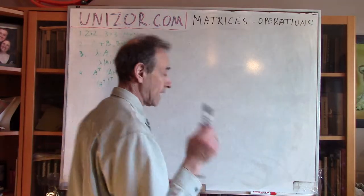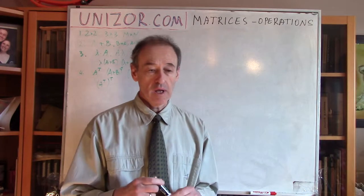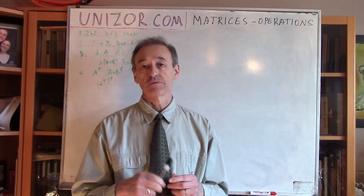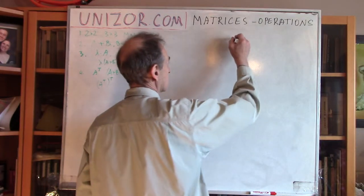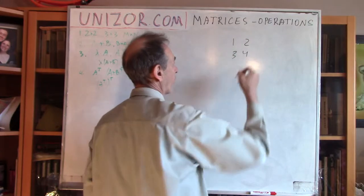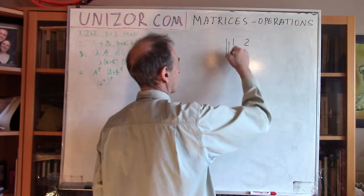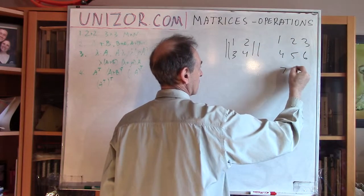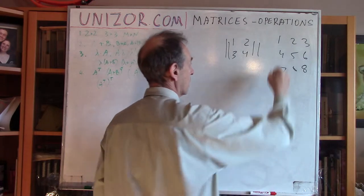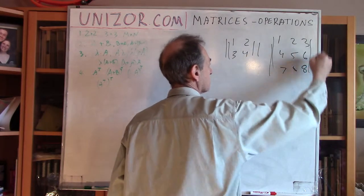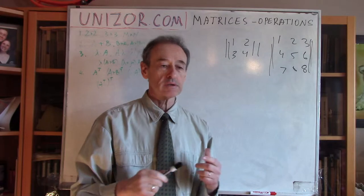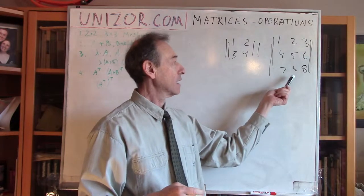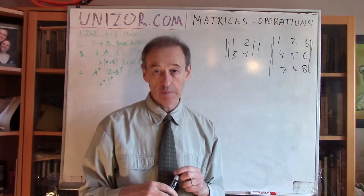First of all, I would like to mention one more thing here. Mostly we will be dealing with square matrices of 2x2 size, or 3x3 size. These two types of matrices represent linear transformations of the plane — two-dimensional space — and three-dimensional space.